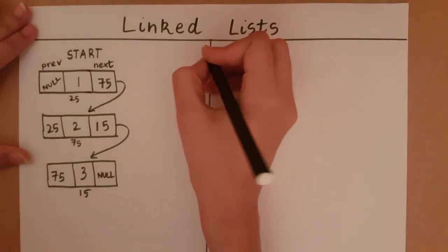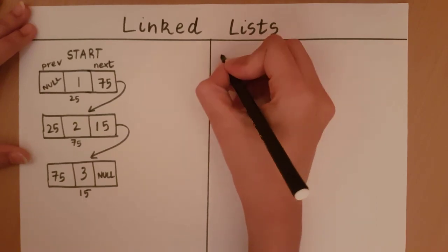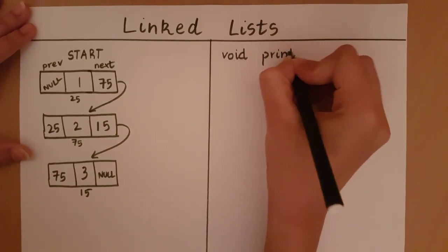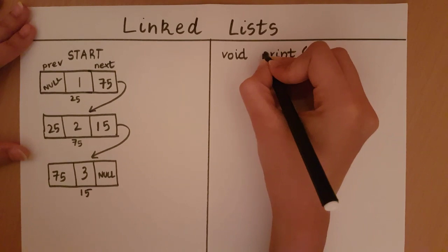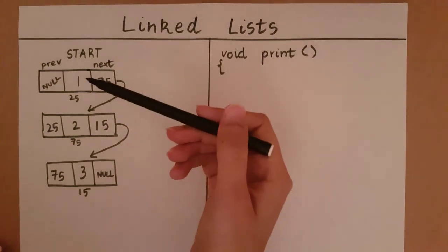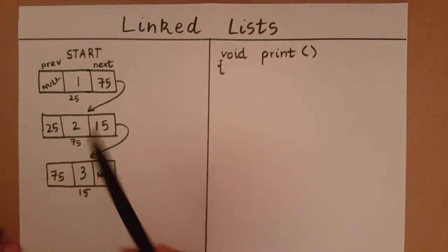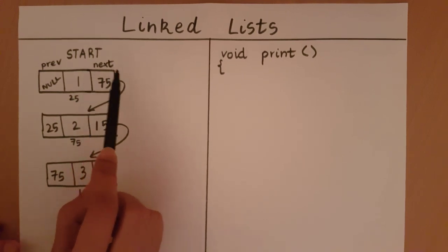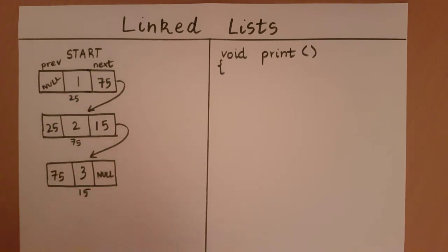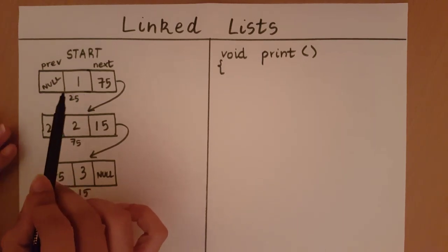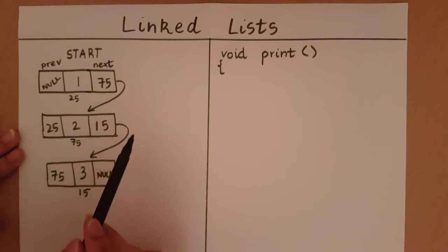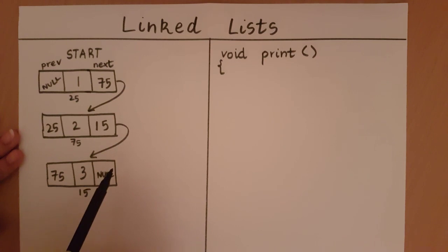So let me create the print function. It's not going to return anything since it only prints out the different data, and it won't accept anything either. What must this function do? It must go from node to node, each time printing out the data and then going to the address given in the next part of that same node. So each time I go to a node, the first thing I'll do is print out the data, then go to the next node, repeat the process, print out the data, go to the next node, print out the data. Once I reach null I will stop.